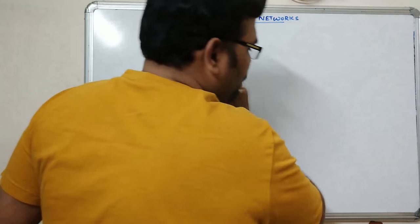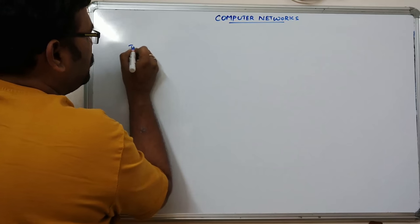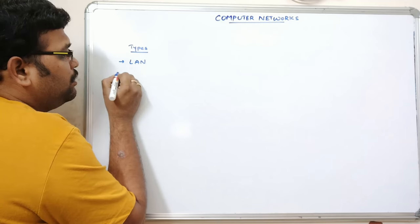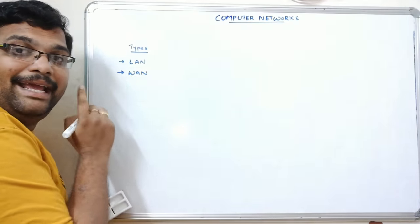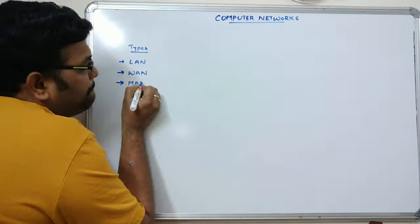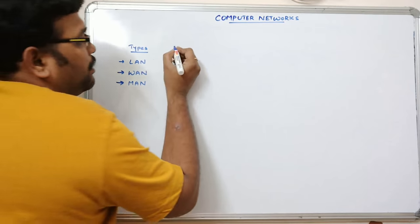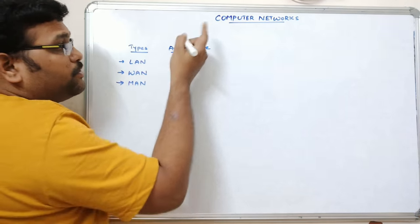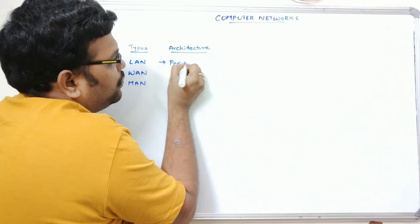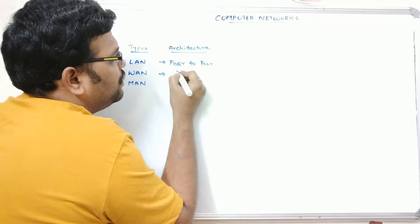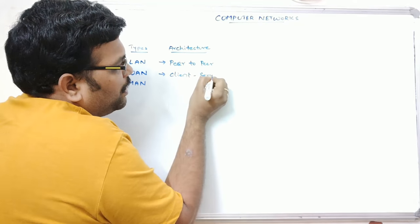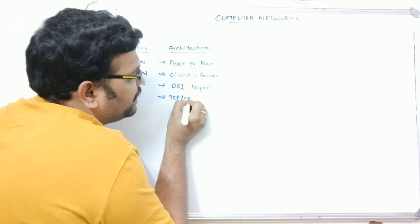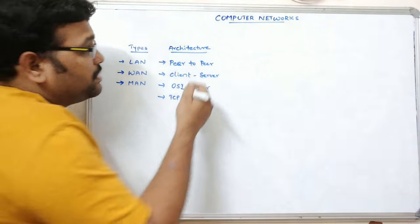There are different types of networks available. One is LAN, which is a Local Area Network; WAN, which is a Wide Area Network; and MAN, Metropolitan Area Network. Based upon the architecture, there are several types of networks: one is peer-to-peer network and client-server network. Apart from this, we will also learn OSI layered architecture and TCP/IP layered architecture in further sessions.